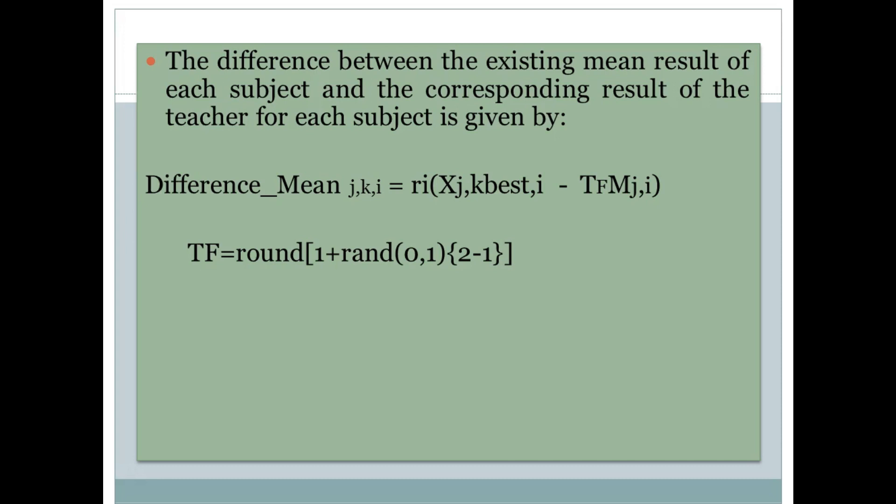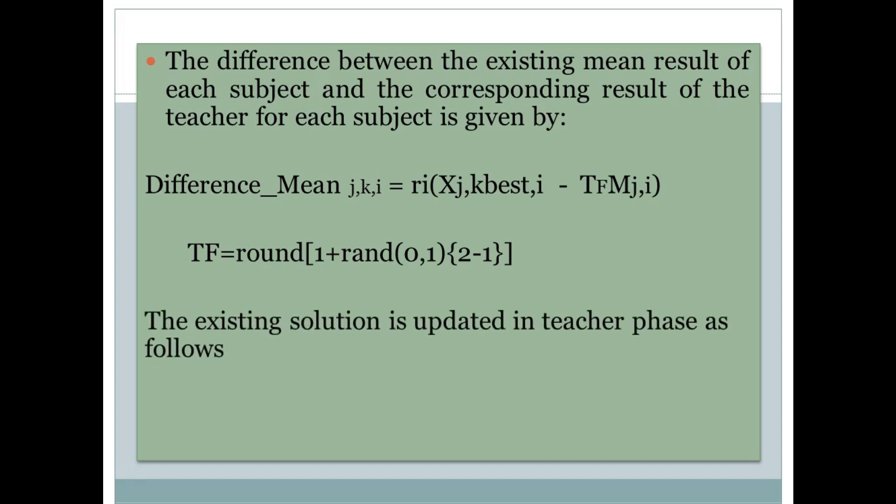The difference formula is: RI × (X_Jk_best_IE − TF × M_GI). X_Jk_best_IE is the result of the best learner in subject J. TF is the teaching factor, which decides the value of the mean to be changed. Experiments show the value of TF can be anything from 0 to 2, but the best results are obtained when taking the value of either 1 or 2. RI is a random number in the range of 0 to 1, included to introduce randomness in the data, as in real life we have randomness.